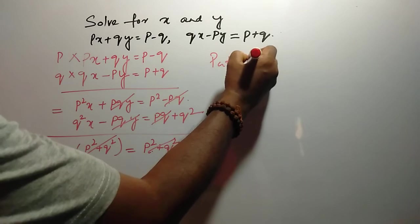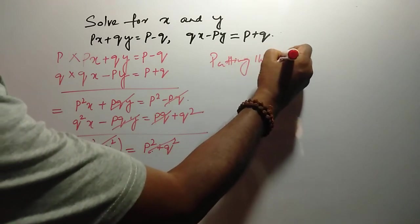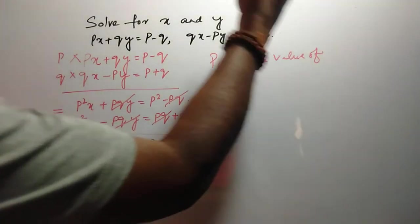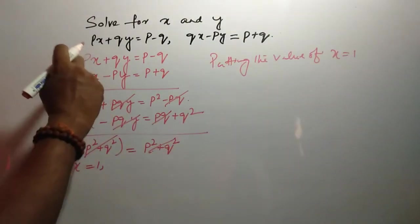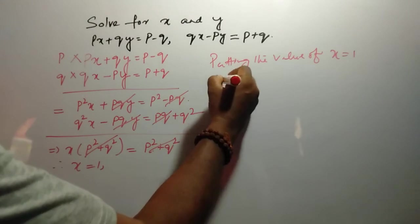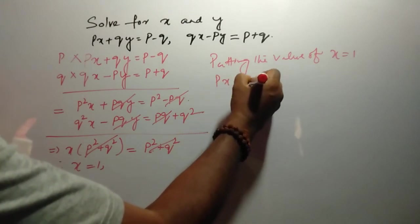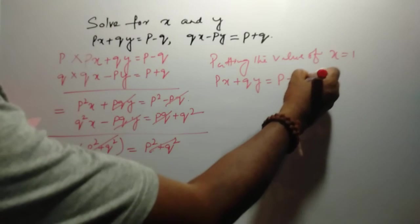Putting the value of X is equal to 1 at equation 1 that is PX plus QY is equal to P minus Q.